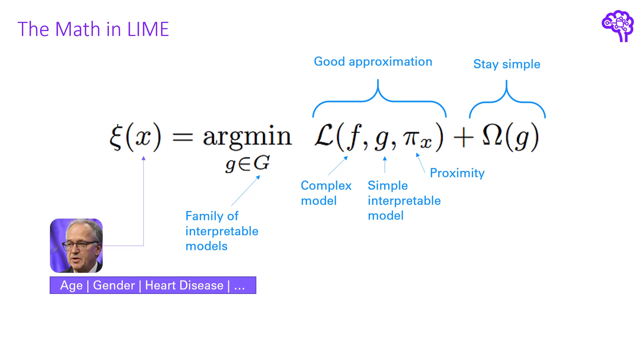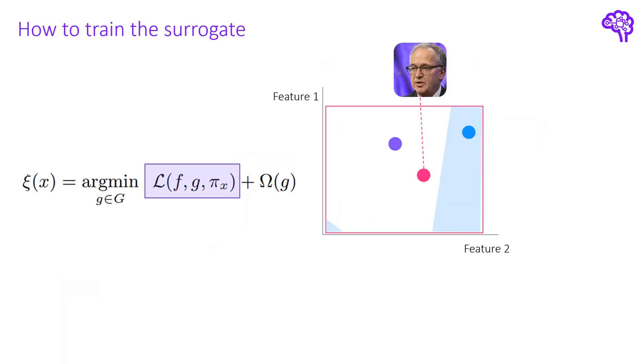In summary, this loss function says that we look for a simple model G, so this is the argument in the argmin, that minimizes those two loss terms. So it should approximate the complex model in that local area and additionally stay as simple as possible. Now, how is this first loss term calculated?